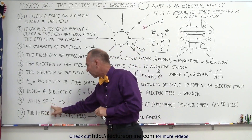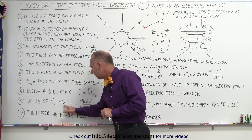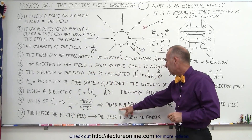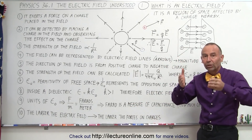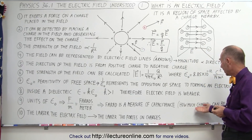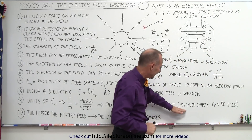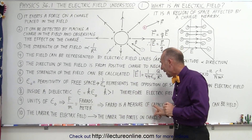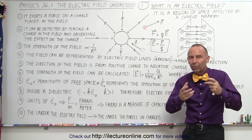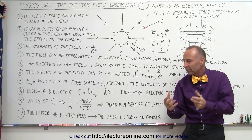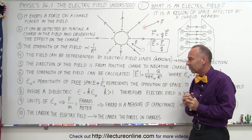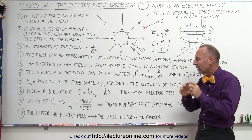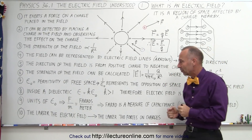The units of epsilon sub naught, the permittivity of free space, is equal to F over m — F being farads, and m being meters. A farad is a measure of capacitance, the unit used to measure the capacitance of a capacitor, which is able to store charge. This gives an indication of how much charge can be held. Free space in a way has a property to hold charge, causing an electric field to exist, and there's some relationship between capacitance, the ability to hold charge, and setting up an electric field — there's some property of space that allows nature to do that.